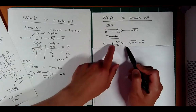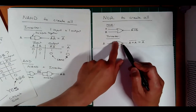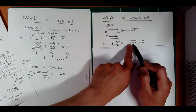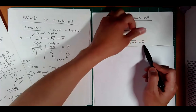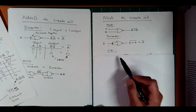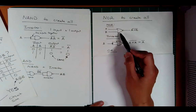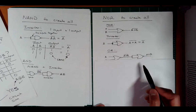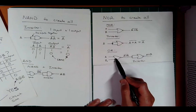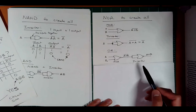With two tied inputs A, you're computing A NOR A — which is A plus A, all inverted. Since A OR A equals A, this gives A-bar: an inverter. For an OR gate, just throw an inverter on the output of a NOR gate — invert the NOR and you get an OR.